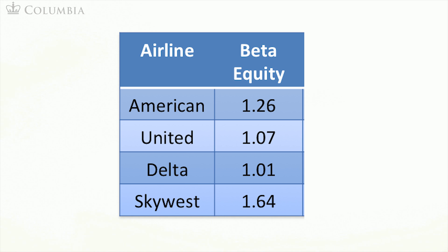Why is there so much variation in these firms' betas? One possibility relates to what we were discussing before. Shocks to demand for travel or shocks to oil prices are business risk. While it is true that these airlines probably have very similar business risks, perhaps they have different levels of financial risk.